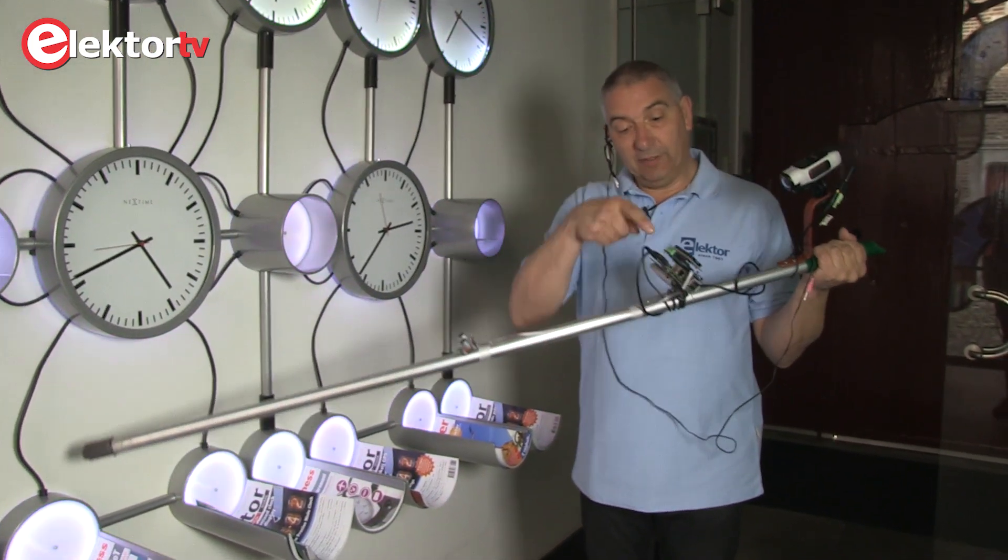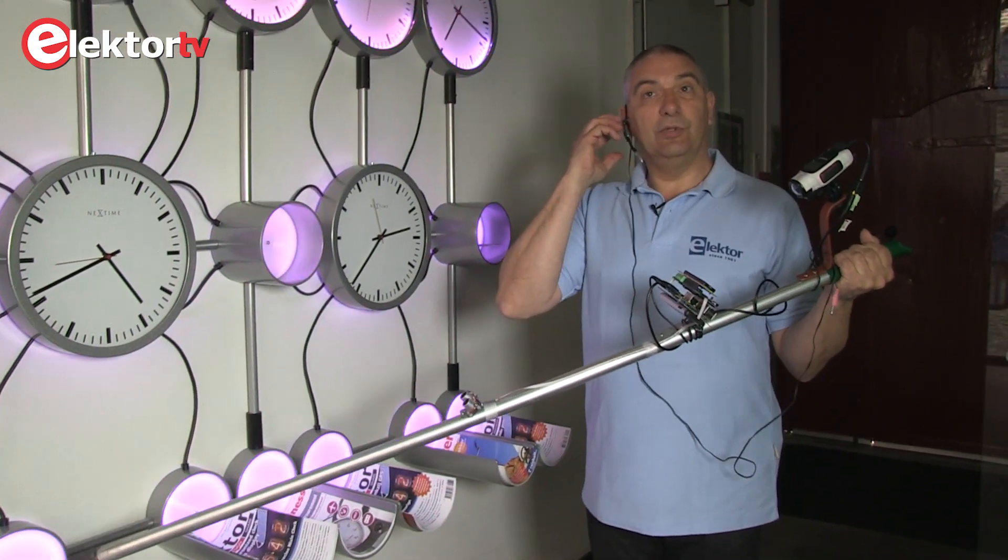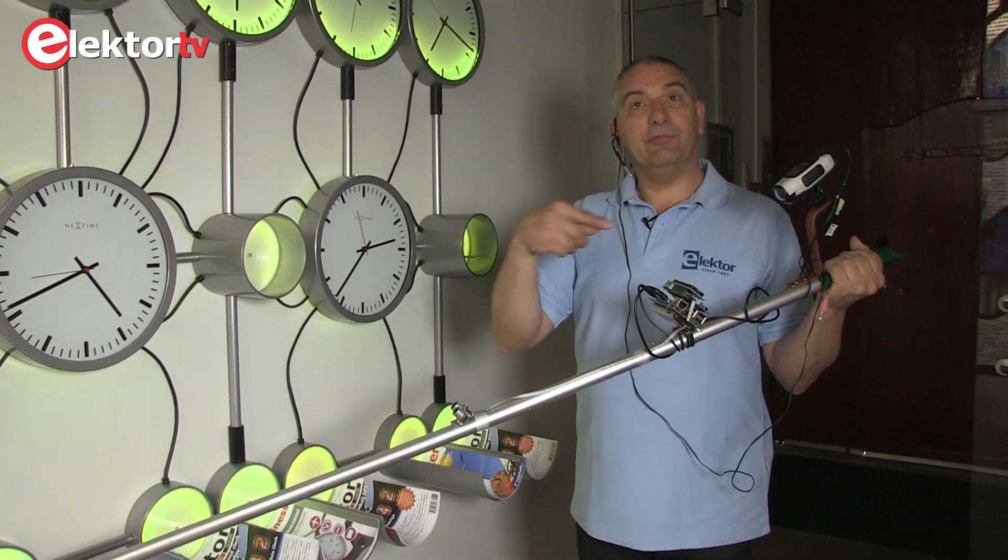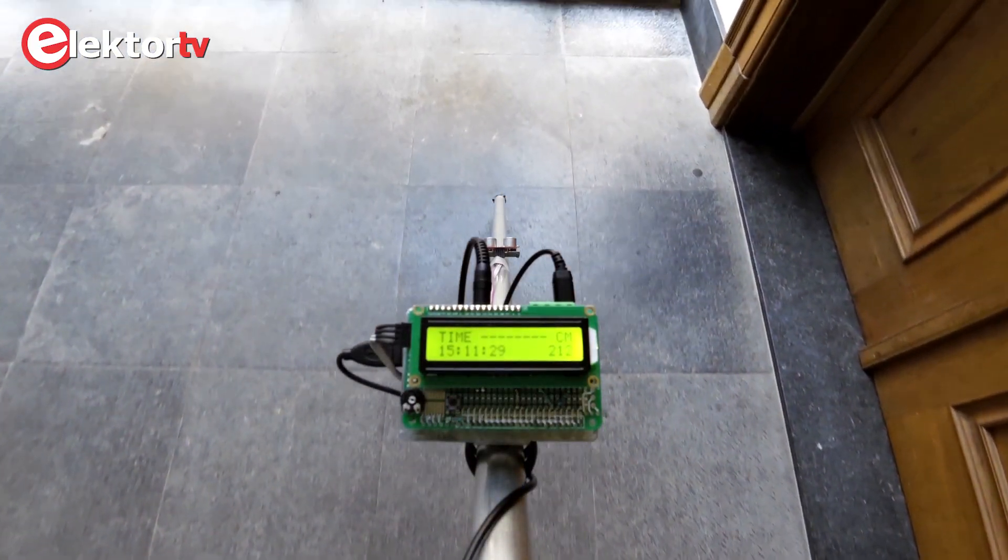And it contains a Raspberry Pi and a little display. And it also tells you what distance that you have from the object. We're testing it. Two hundred and twelve.